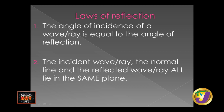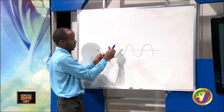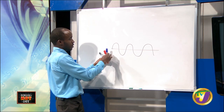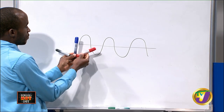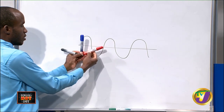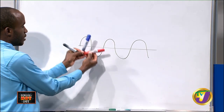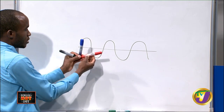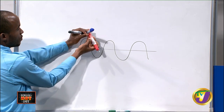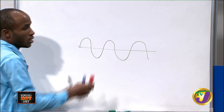Second law: the incident wave, the normal line, and the reflected wave all lie on the same plane. This means all of them lie on a flat surface and move to maintain that flat surface — you can't deviate from it. So that's what the second law talks about. The first law is essentially this: an incident ray comes in, it hits the surface that does not absorb or allow it to pass through, it bounces off.